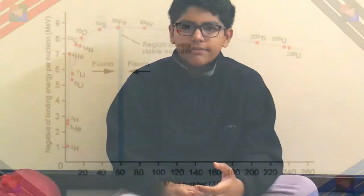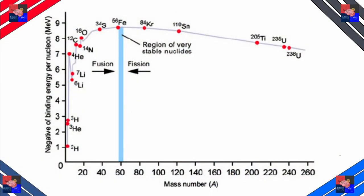Looking at this binding energy graph, atoms with a high binding energy like iron-56 are very stable and unlikely to undergo nuclear reactions. Atoms with masses higher than iron-56 are likely to undergo nuclear fission, whereas atoms with masses lower than iron-56 are likely to undergo nuclear fusion.